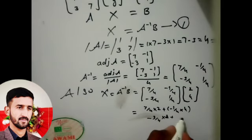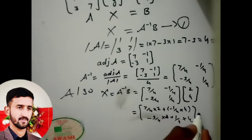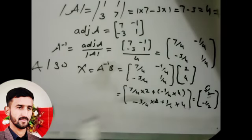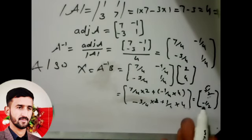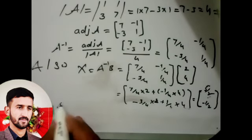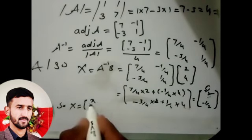Simplify this solution: this equals 5/2, and this one equals minus 1/2. So X equals [x; y] matrix.